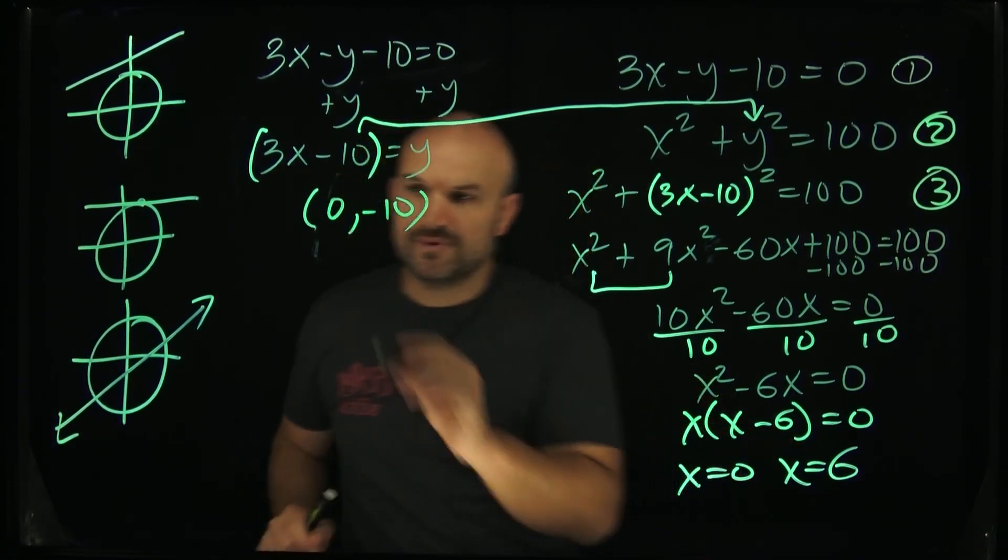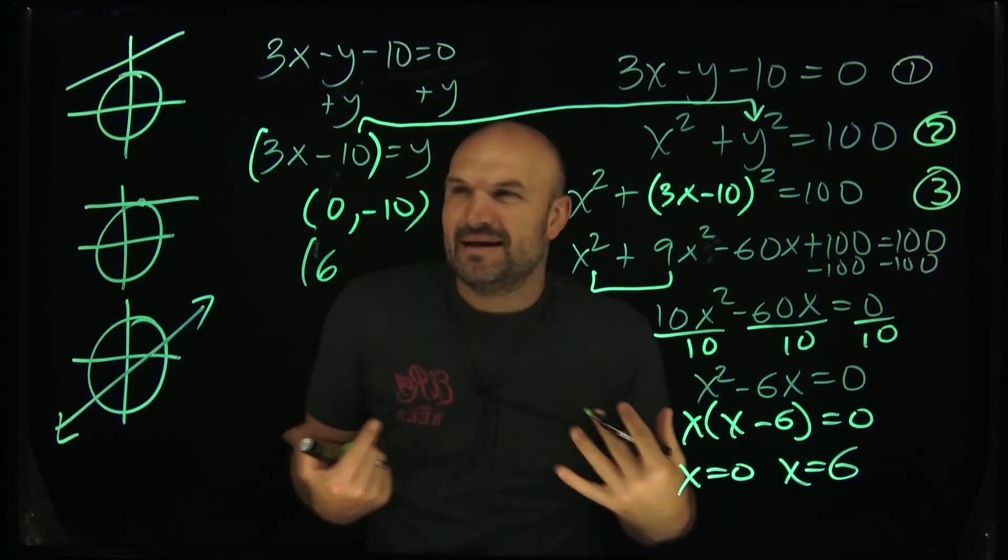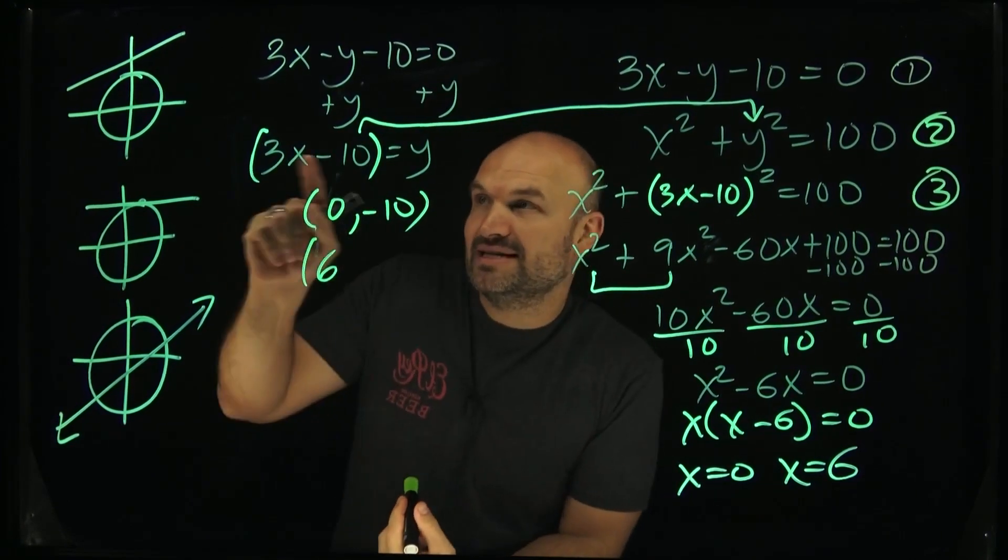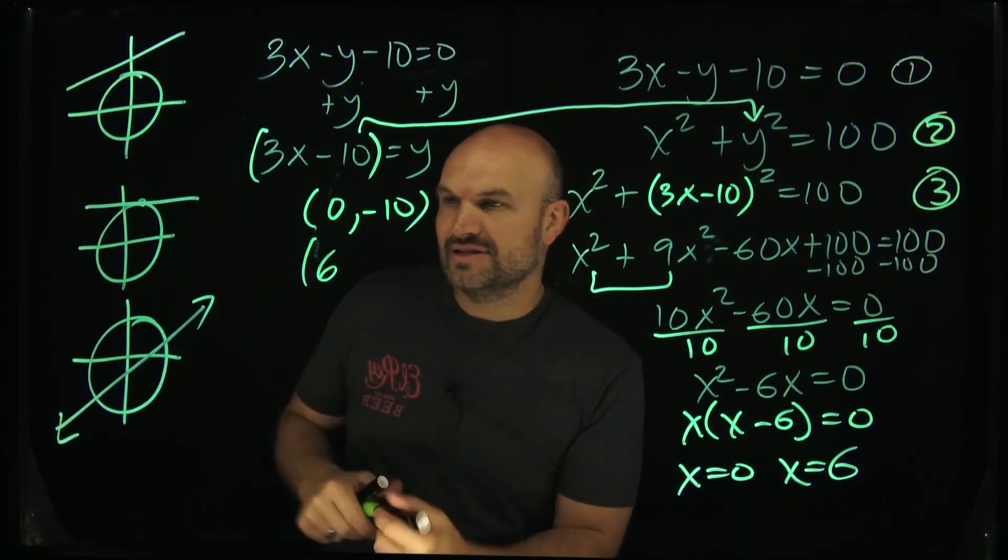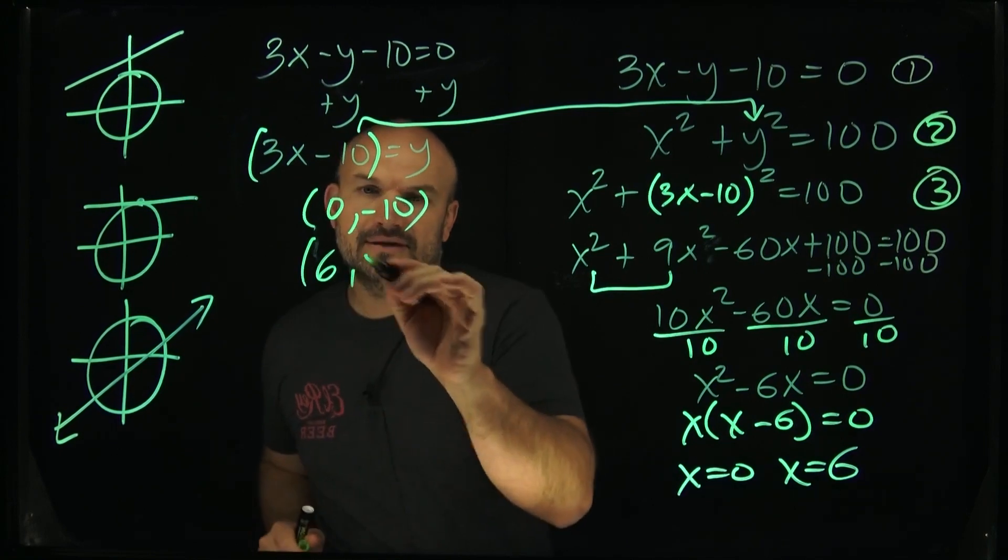The other point is when x equals six. You can just do the math in your head. Three times six is going to be 18 minus 10 is 8. So in this example, I have 6 comma 8.